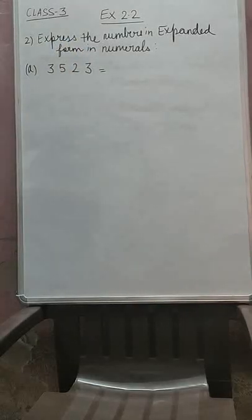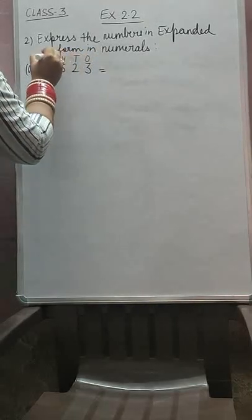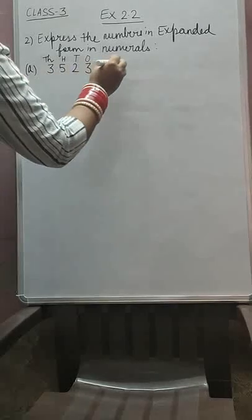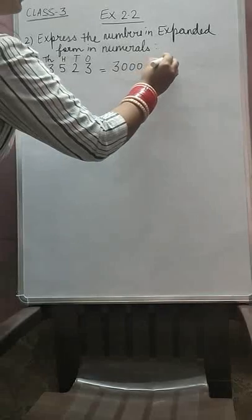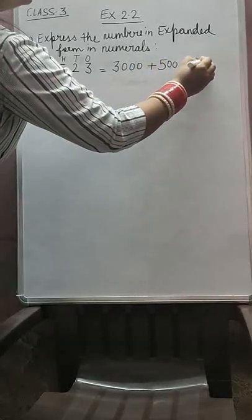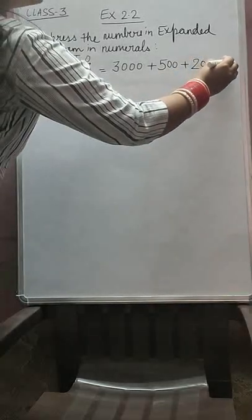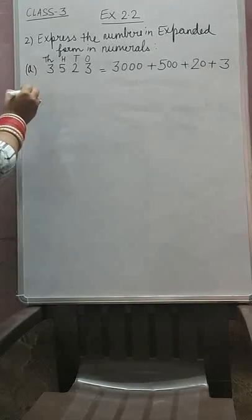So how we will express it in the expanded form? First of all we will fix its position: 1, 10, 100, 1000. How many thousands we have? 3,000. What do you mean by 3,000? That is 3, after it 3 zeros. Plus how many hundreds we have? 5 hundreds. How many tens? 2 tens means 20. How many ones? 3 only, so we write 3 into 1 which is 3.